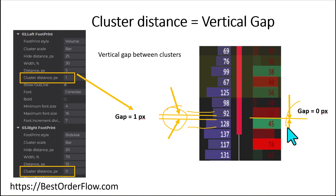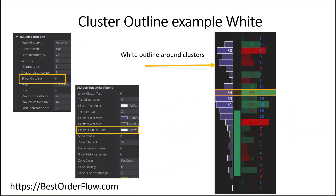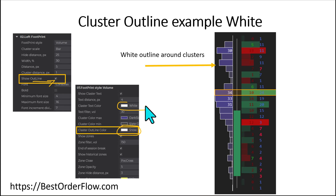There is no gap on the right side because I selected zero for the right side clusters on the footprint. On the left I have one pixel — just for demonstration — and you can see this gap with a one pixel. If we want to make clusters really stand out on our chart, we can change the outline. I selected white color for the outline and for the text itself, so you see the white outline on each cluster and white text for the volume.